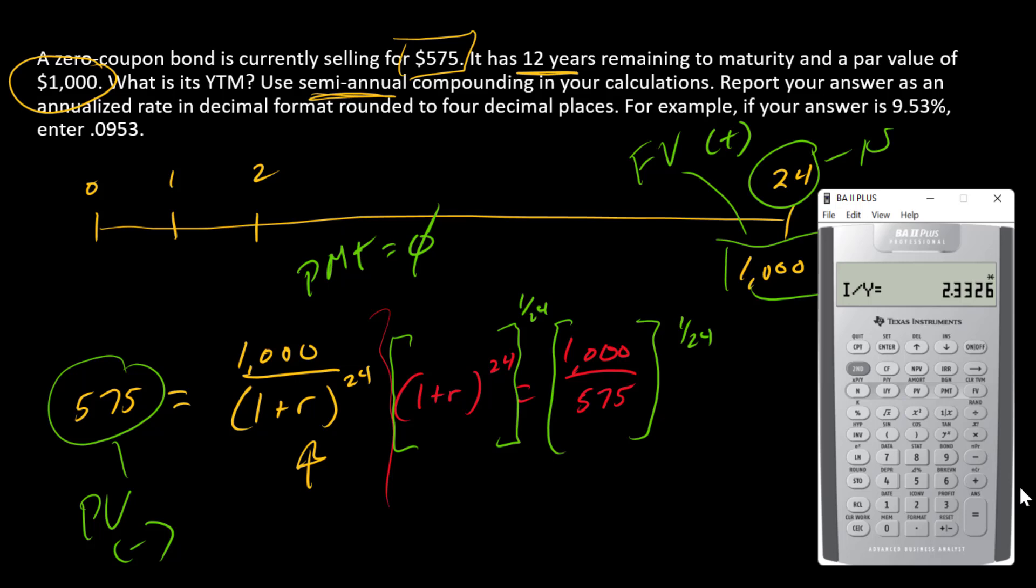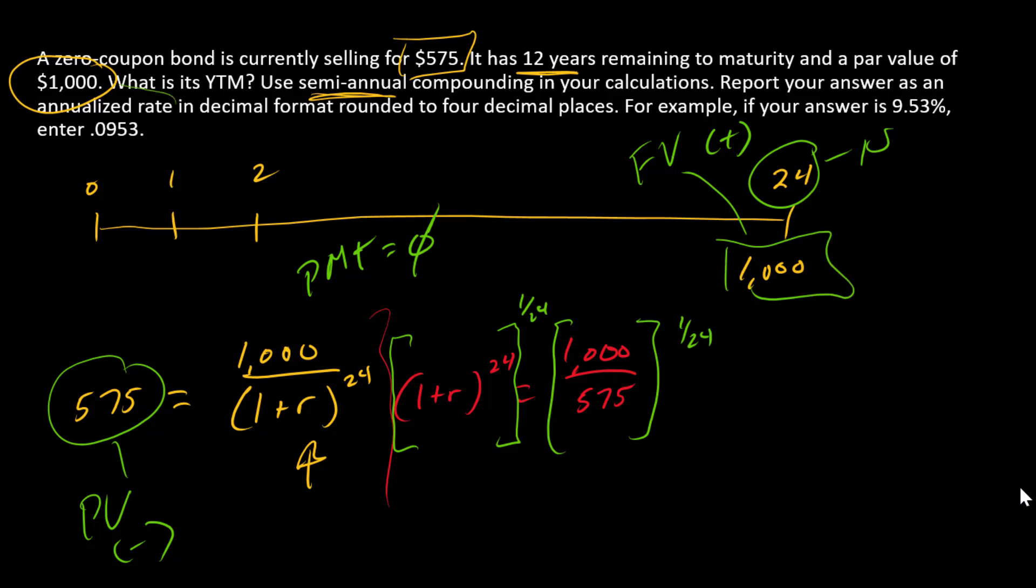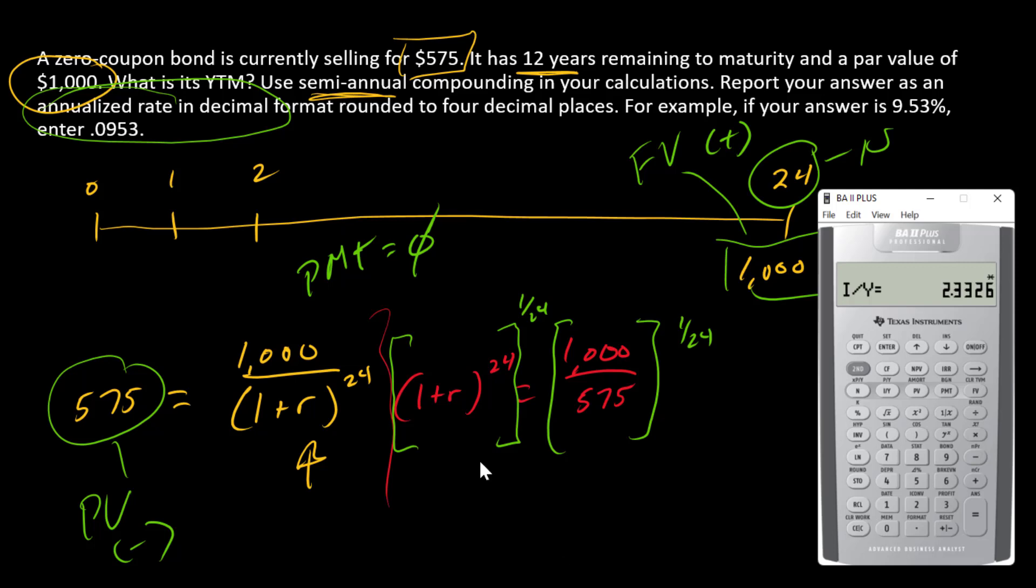Now, one last little note. I ask you typically to present these as annualized rates. Note that that 2.33% is a semi-annual r. So for the final answer, I need to double that number.